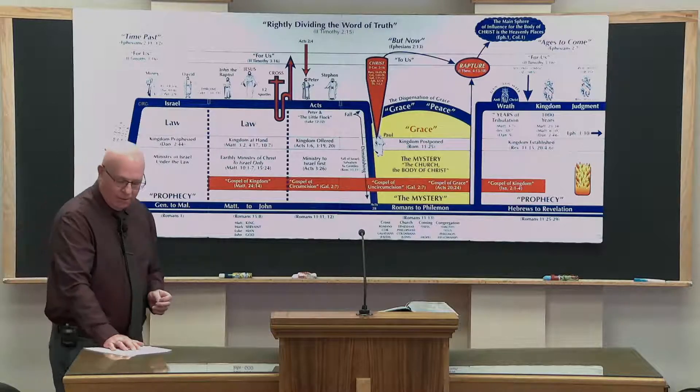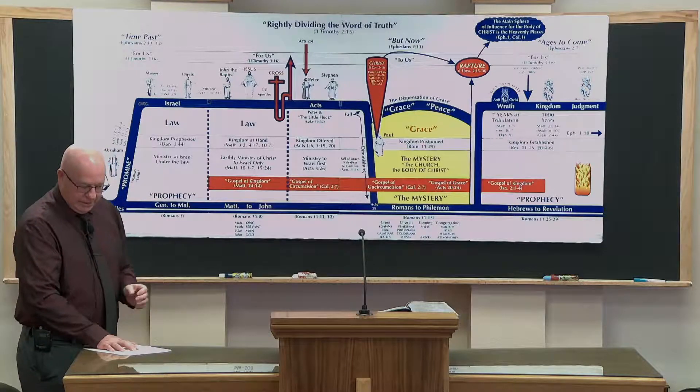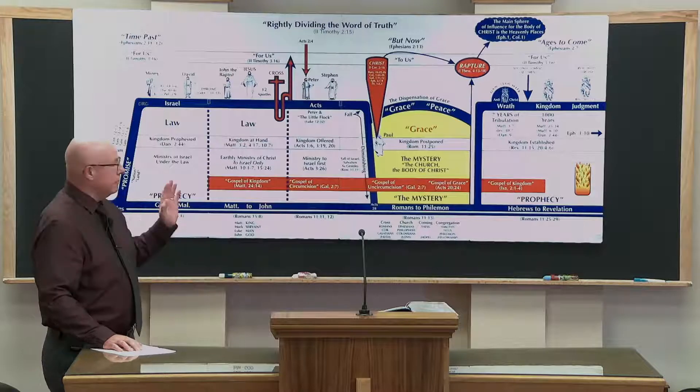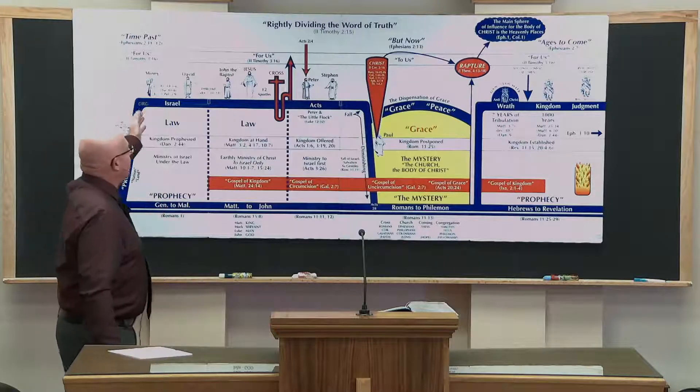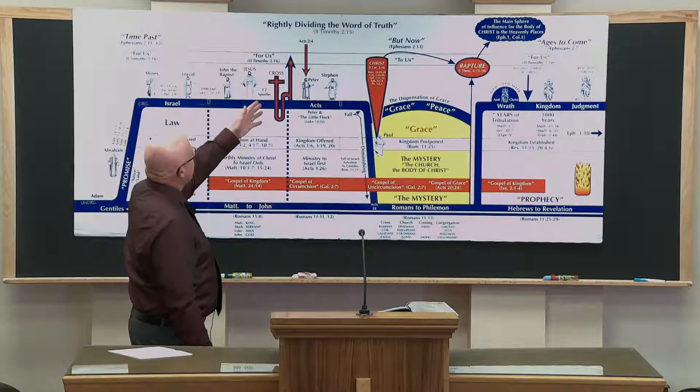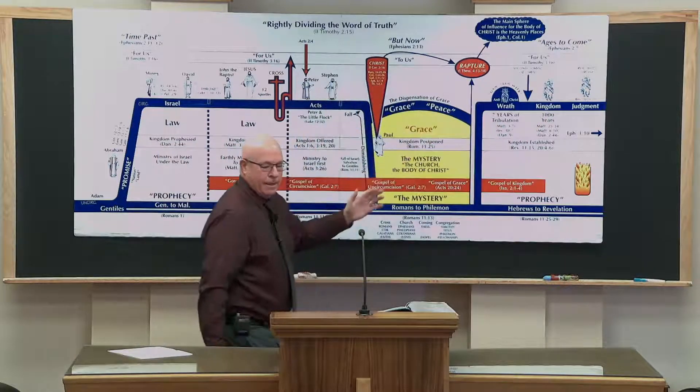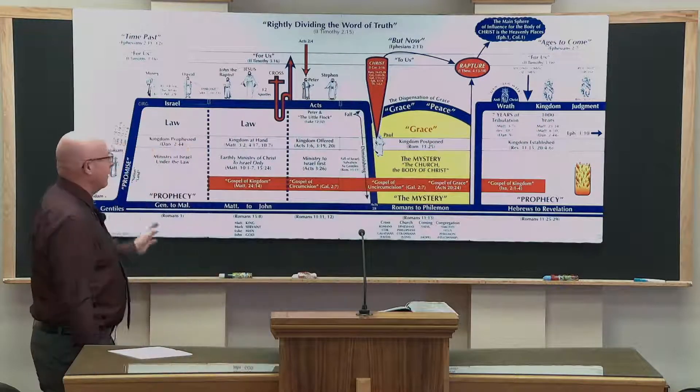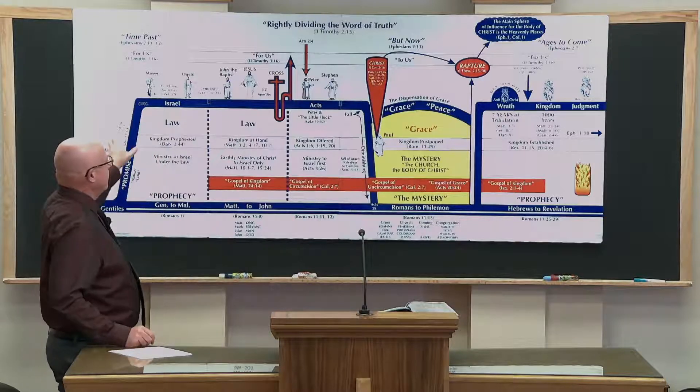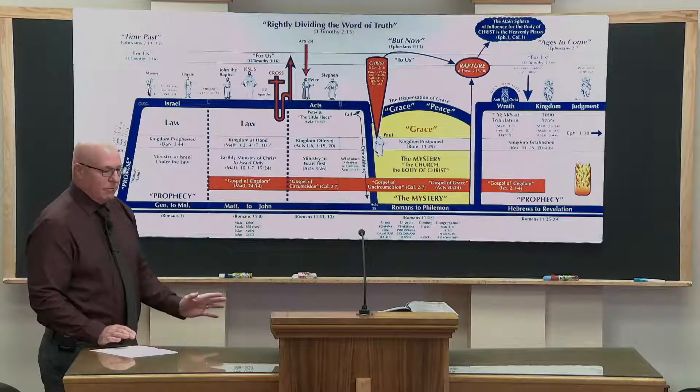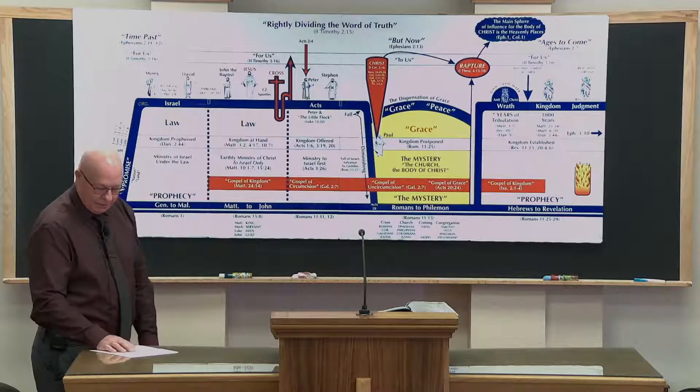Ephesians chapter 2, Paul breaks down our Bible in three distinct time zones. As it says here, time past, but now right here, and ages to come. And you could say, in other words, past, present, future. And that is part of the clarity that we get from rightly dividing.